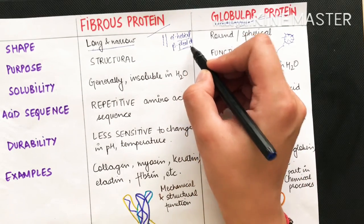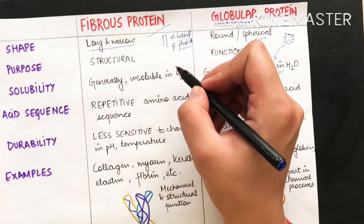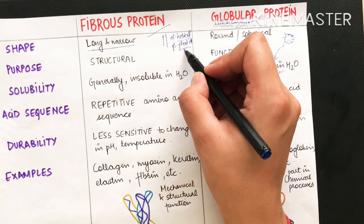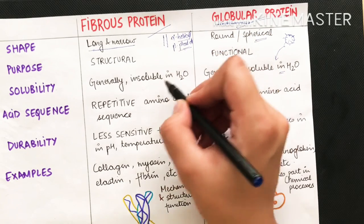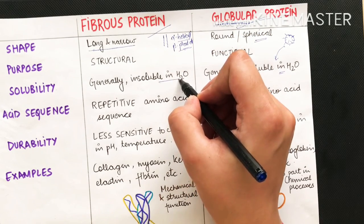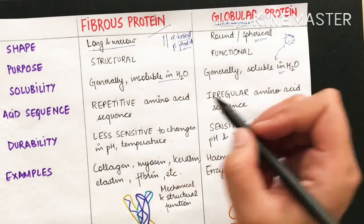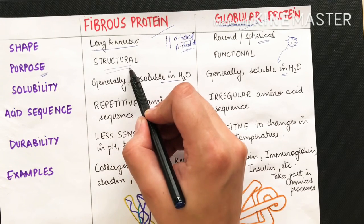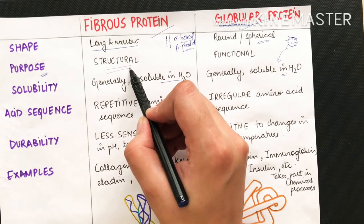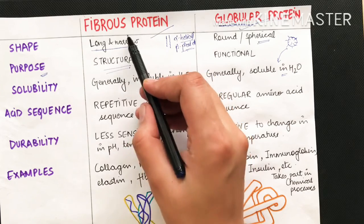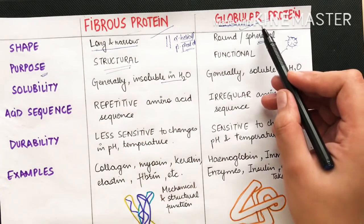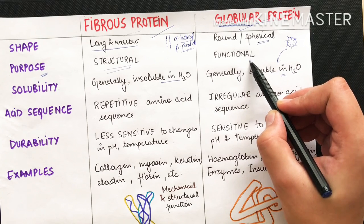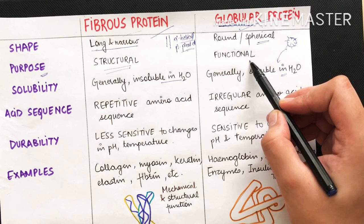Because hydrophilic groups are exposed, globular proteins are soluble in water as well as weak acids and bases. In fibrous proteins, hydrophobic amino acids are fully exposed, making them insoluble in water as well as weak acids and bases. Fibrous proteins usually provide structural strength, so structural proteins are mostly fibrous, while globular proteins are usually enzymes, functional proteins, and immunoglobulins.